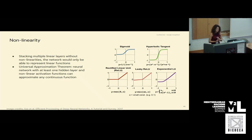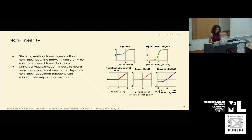We should also consider non-linearity when building a neural network, because if we just stack multiple linear layers with no non-linearity, that would only be able to represent a linear function. The universal approximation theorem says that a neural network with at least one hidden layer and a non-linear activation function can approximate any continuous function. Some frequently used ones are Sigmoid, tanh, and ReLU — ReLU is quite commonly used in practice.